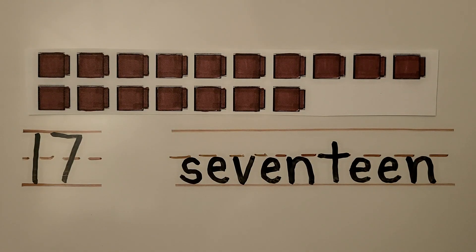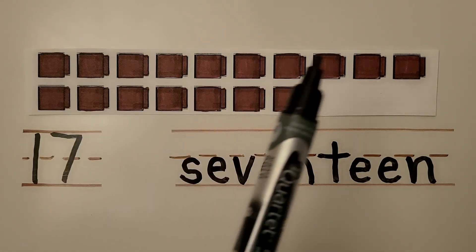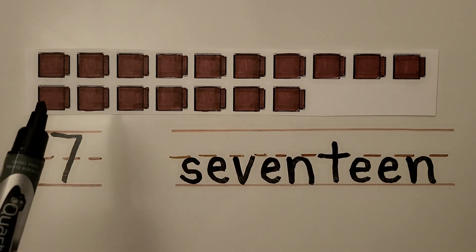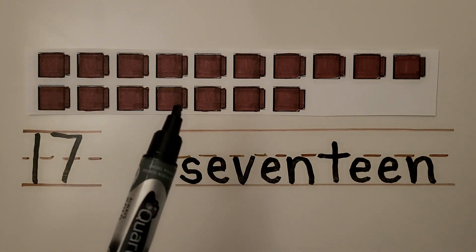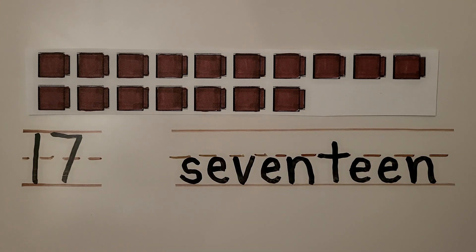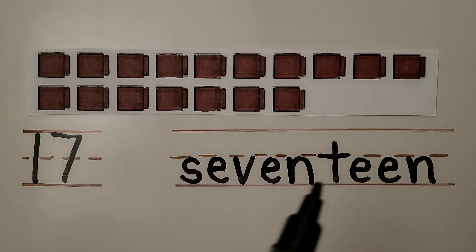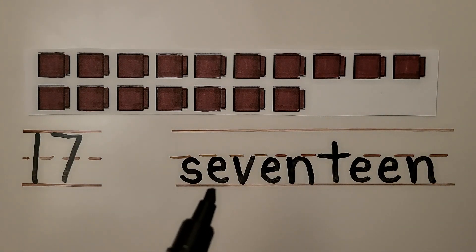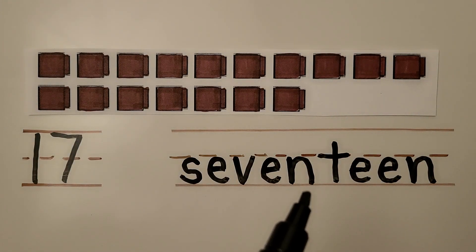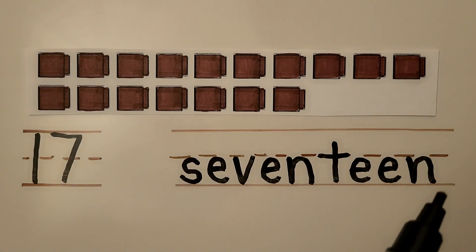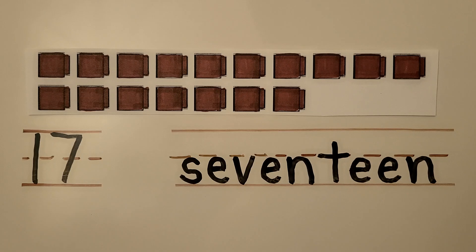Here we have more cubes. We have 10 cubes in the top row and 1, 2, 3, 4, 5, 6, 7 cubes in the bottom row. There are 17 cubes. Here's the number 17 — it's a 1 with a 7 next to it. And here's the word 17: S-E-V-E-N-T-E-E-N. 17 is 1 more than 16.